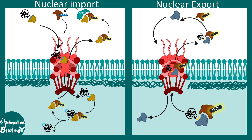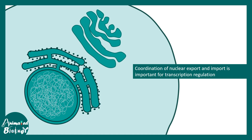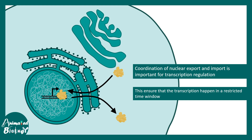This regulated nuclear import and export is critically important for proper transcriptional regulation, nucleosome remodeling, and repair mechanisms. For example, a transcription factor may need to be present in the nucleus for only a specific duration of time — it does its transcription and then must exit. By shuttling in and out, the transcription organized by that factor becomes time-restricted to a particular window, enabling precision regulation of transcription.